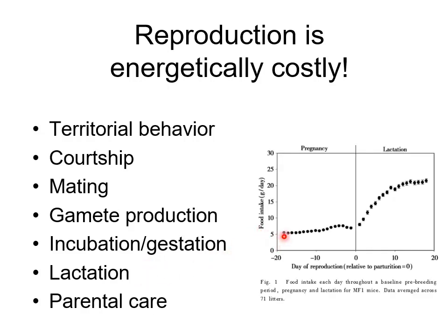This is food consumption in a mouse as it goes through its pregnancy and then lactation. As soon as it hits lactation, when it's got to feed the young, food intake goes up remarkably. The energy costs of general parental care are very high. So it's not surprising that energy balance and reproduction are closely associated physiologically.